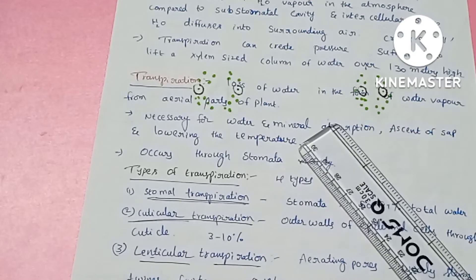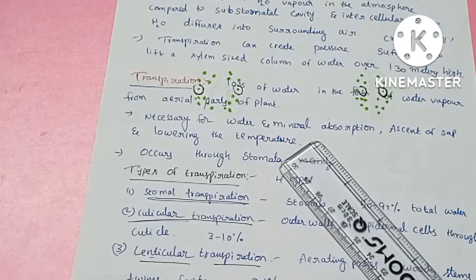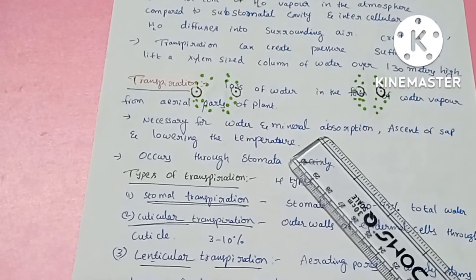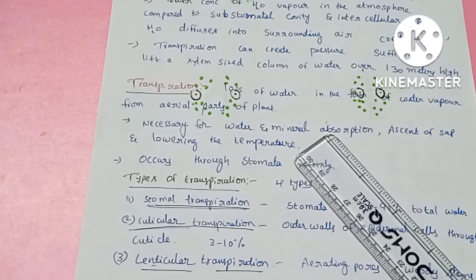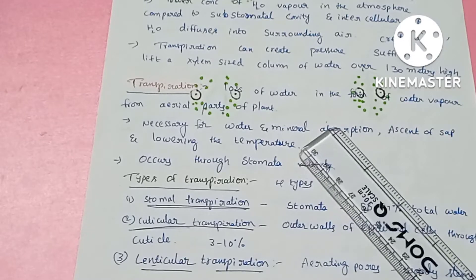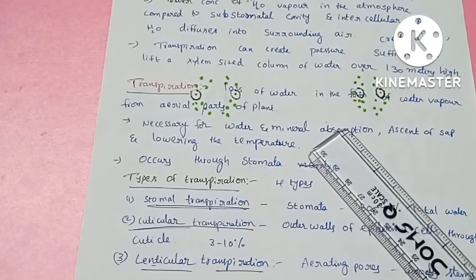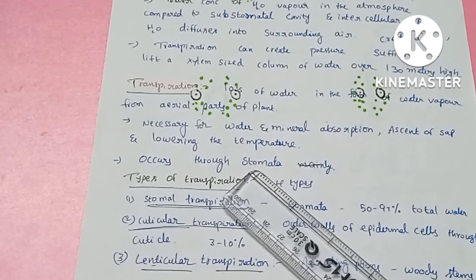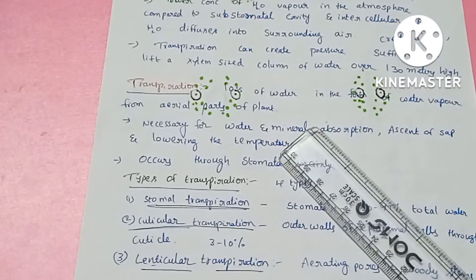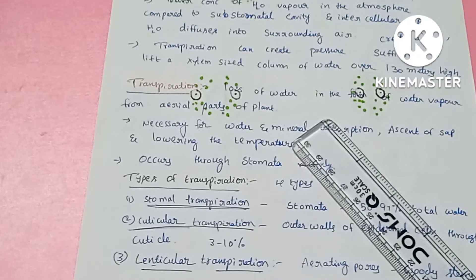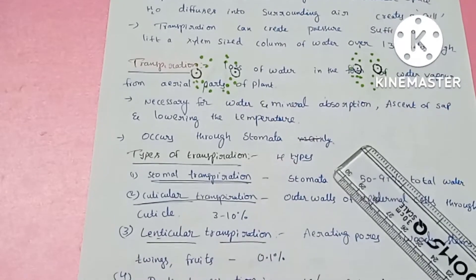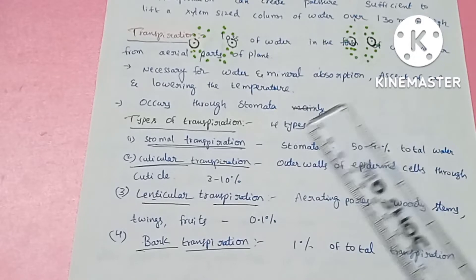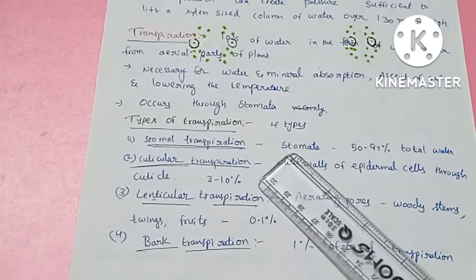Transpiration also helps in lowering of temperature when the plant releases water vapor into the atmosphere, it can cool the surrounding environment. The main structure involved in transpiration is the stomata.